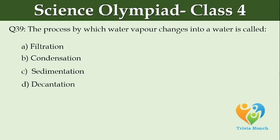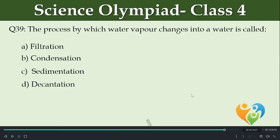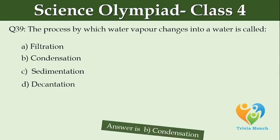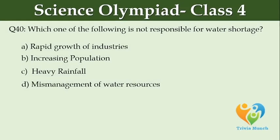Which one of the following is not responsible for water shortage? Option A: rapid growth of industries, Option B: increasing population, Option C: heavy rainfall, Option D: mismanagement of water resources.